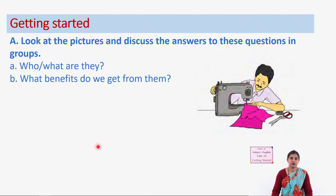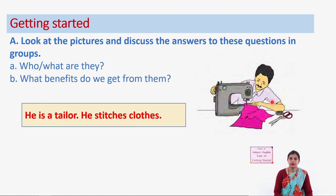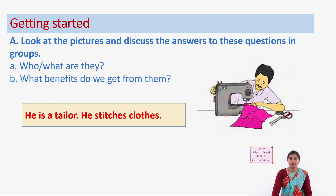So the first picture shows a man with a sewing machine — the man is stitching a dress. What do we call people who stitch our clothes? Yes, he is a tailor. He stitches the clothes, the dresses, the uniforms which you wear while going to school. We need clothes to cover our body, and a tailor is the one who stitches and prepares our clothes.